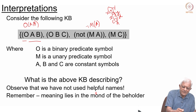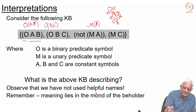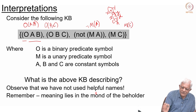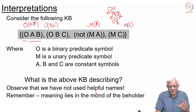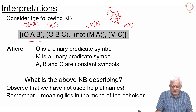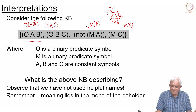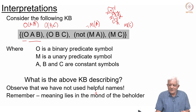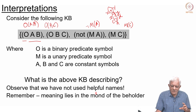Let us look at two interpretations for this knowledge base to see it could stand for two very different things — once you decide what O stands for, what M stands for, and what A, B, C stand for. The knowledge base says: O(A,B), O(B,C), not M(A), and M(C) — four sentences, three atomic and one with negation. What do these sentences mean? They could mean different things based on your choice of domain and mapping function.